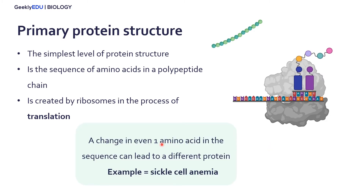Even a change in a single amino acid can lead to a different protein, so this translation process is really important to make sure that everything runs smoothly within our cells. An example of the consequences of an error in an amino acid sequence is sickle cell anemia. This is where a change in just one amino acid leads to our red blood cells not being the normal red blood cells that can very effectively deliver oxygen, but instead these very differently shaped, almost sickle moon-shaped hemoglobin or red blood cells that are not as effective as if we had the correct amino acid sequence.